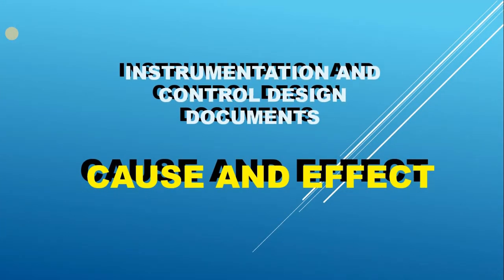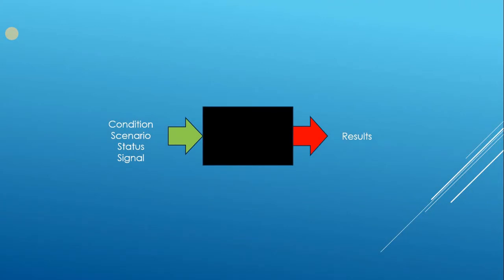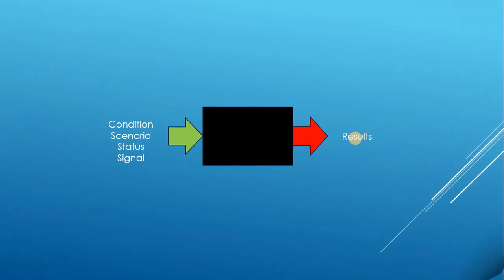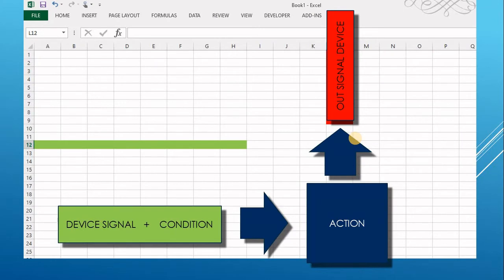Hello and welcome to a new video. This video will talk about one of the design documents generated by the instrumentation and control guys, called the cause and effect. In the DCS or PLCs you need to program based on a document from the designing company or EPC company. The cause and effect does not tell the programmer how to program his PLC or DCS; rather, we give them conditions, scenarios, status, or signal values, and tell them when this happens, give us these results — close this valve, open this valve, stop the pump or motor.